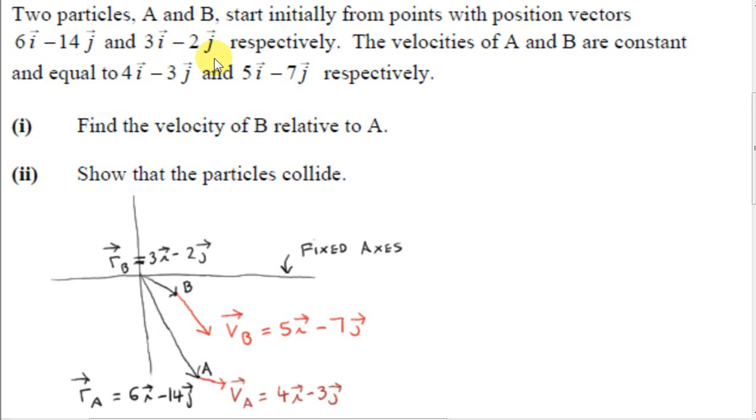Two particles A and B start initially from points with position vectors 6i-14j and 3i-2j respectively. The velocities of A and B are constant and equal to 4i-3j and 5i-7j respectively.